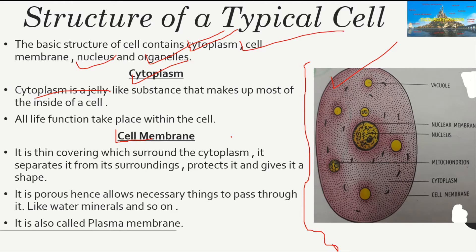Next is the cell membrane — the layer that separates the cytoplasm from its surroundings. Its function is to separate the cell from the surroundings, protect it, and give it shape. It is porous, meaning it allows the passing of certain materials like molecules of food, water, and minerals. It is also known as the plasma membrane.